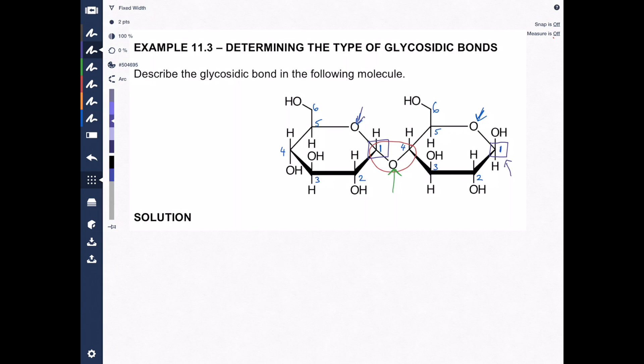Now notice, on carbon number one of the left-handed sugar, the oxygen is in the downward position. That's alpha. Just like when we assigned it for monosaccharides, we looked at the OH, and in glycosidic bonds, you just look for the O, the oxygen. Here the oxygen is down.